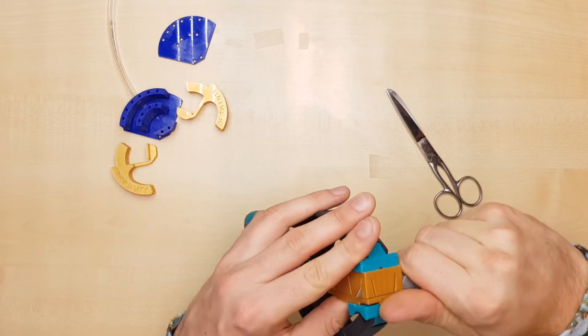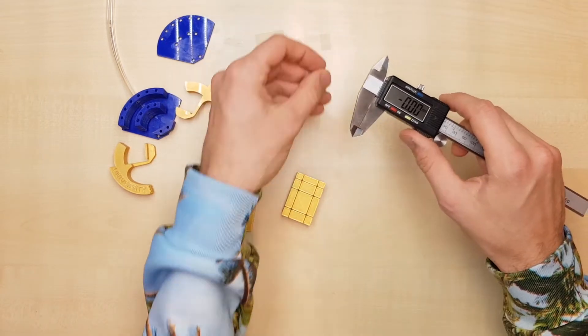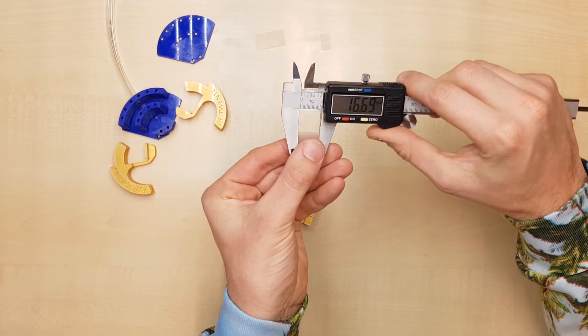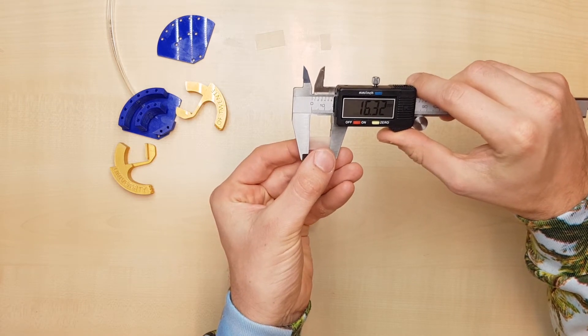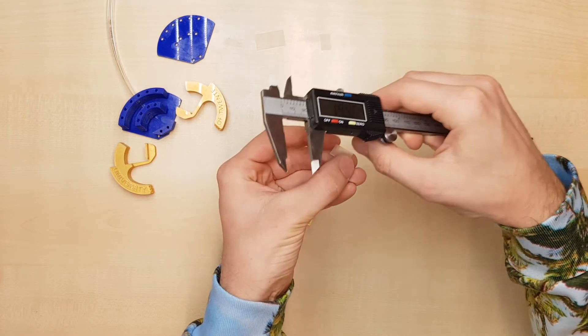It's very important that the dimensions are accurate. The seal height should be around 16.2 or 16.3mm.